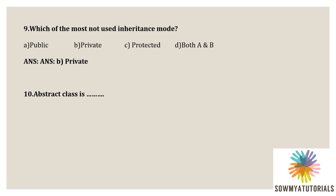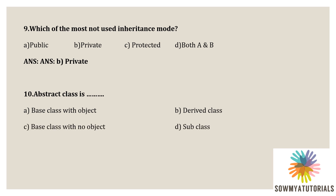Next question: abstract class is what? Options are option A: base class with object, option B: derived class, option C: base class with no object, option D: subclass. The correct answer is option C, base class with no object — meaning an abstract class is not used to create objects, but is designed only to act as a base class.